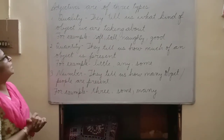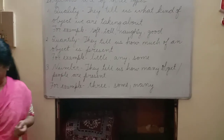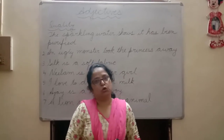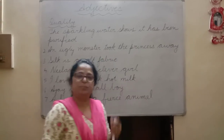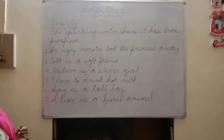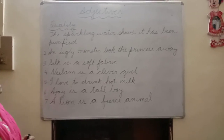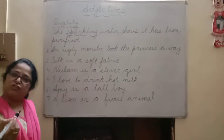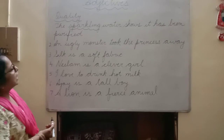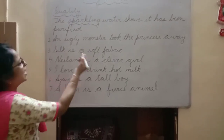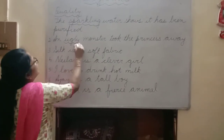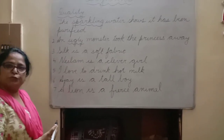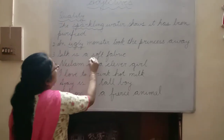Today I am going to tell you about the first one, that is adjective of quality. I have written a few sentences on the board. The first sentence: 'The sparkling water shows it has been purified' — water has been described as sparkling, so 'sparkling' is an adjective of quality. The second: 'An ugly monster took the princess away' — monster has been described as ugly, so 'ugly' is an adjective of quality. The third: 'Silk is a soft fabric' — what kind of fabric is silk? It is soft, so 'soft' is an adjective of quality.